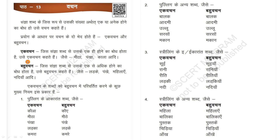Now Bahu Wachan. Jis sangya sab se uske ek se adhik honne ka bot hota hai — that is, in a noun word that indicates more than one. That is Bahu Wachan — plural. For example: Larki is plural, Pangkhe, Mahilaye, Nadia, etc.